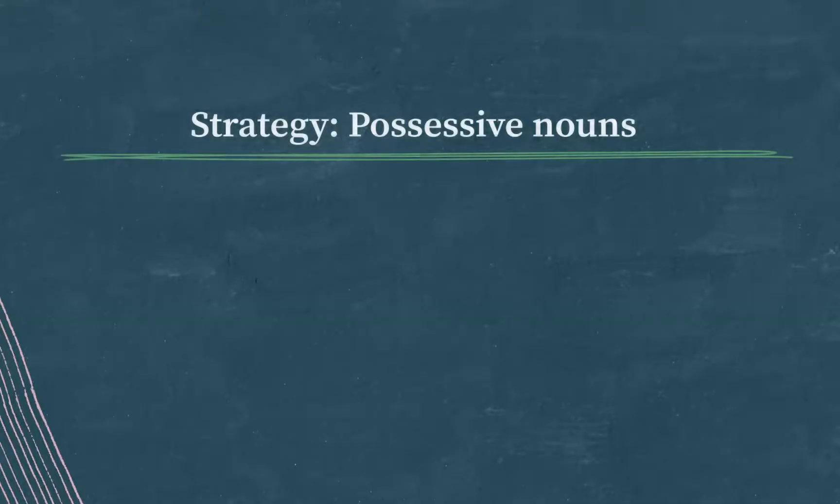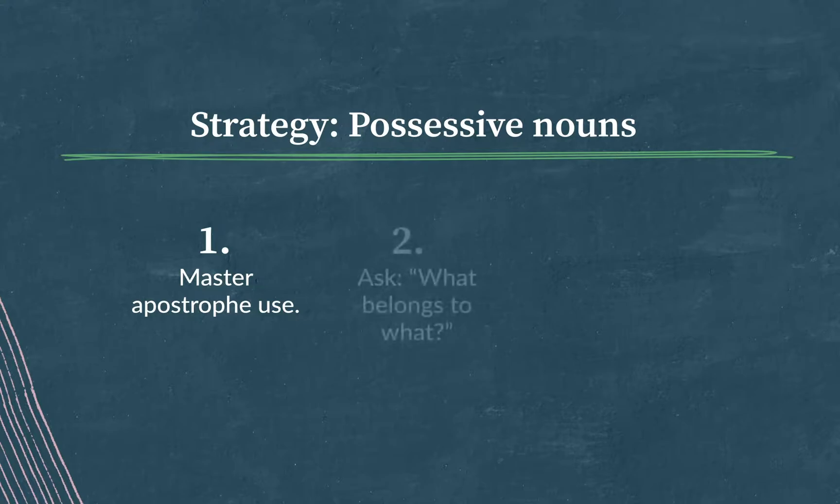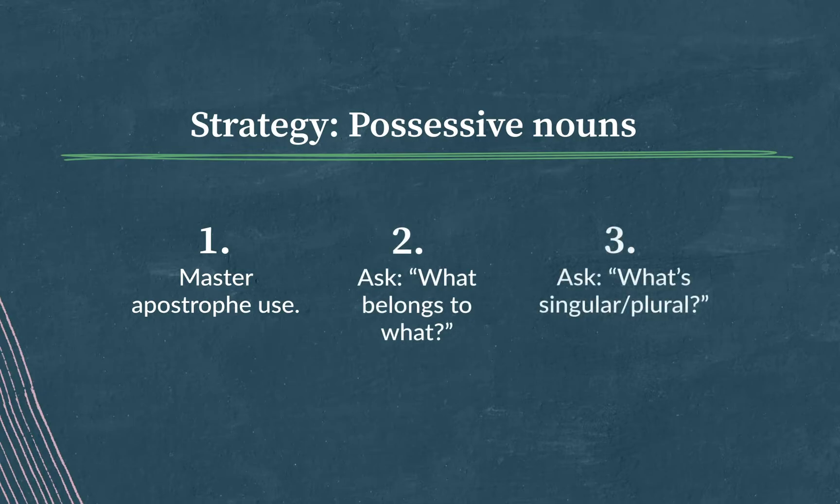Here's our strategy. For questions like these, you'll need to have a solid handle on how apostrophes are used to show possession. So first you'll need to master apostrophe use. And once you've recognized that we're dealing with possession, figure out what belongs to what. Once you've sussed out the possession side of things, then ask which nouns are singular and which are plural. And that will help you determine where the apostrophes ought to go. Good luck. You've got this.